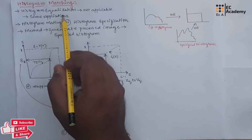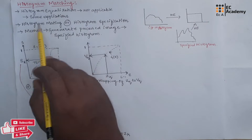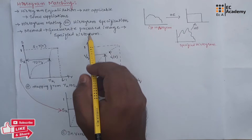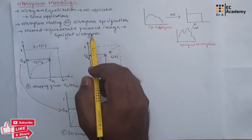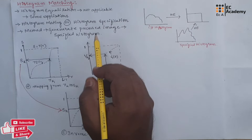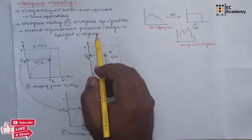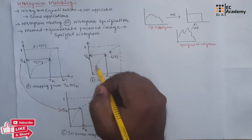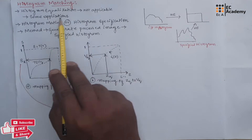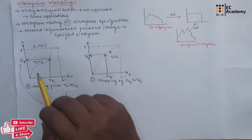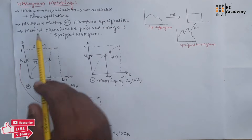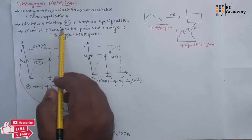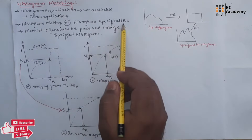Histogram Equalization is not the best approach for some applications because it is applied to the entire image. It is not suitable if we wish to enhance a specific region of an image. That is why we will go with a new approach — Histogram Matching, which is also known as Histogram Specification.